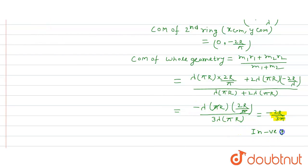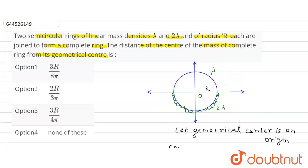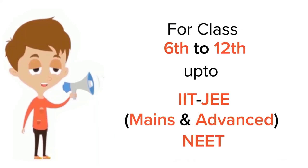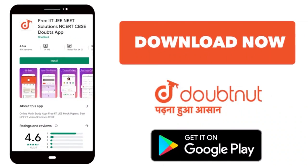So the answer is 2R/3π, in the negative y-axis direction. Option 2 is the correct option. Thank you. For class 6 to 12th, IIT JEE, and NEET level — trusted by more than 5 crore students. Download the DoubtNet app today.